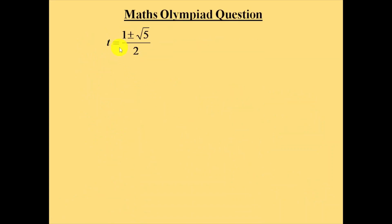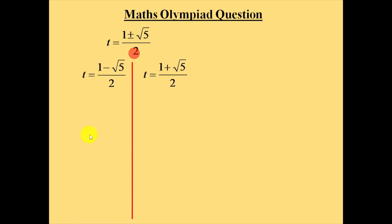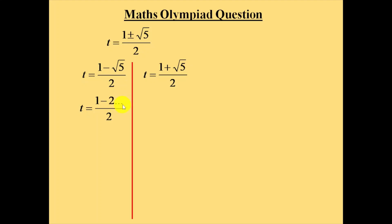So we have two possible values: t equals 1 minus square root of 5 over 2, and t equals 1 plus square root of 5 over 2. For the first case, square root of 5 is 2 point something — greater than 2, because 5 is greater than 4. So 1 minus square root of 5 will be a negative value, meaning the total result is negative. This is not a real solution, so we can ignore the case t equals 1 minus square root of 5 over 2.